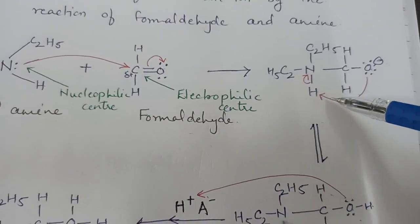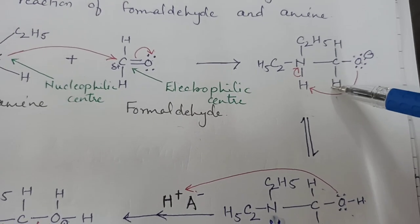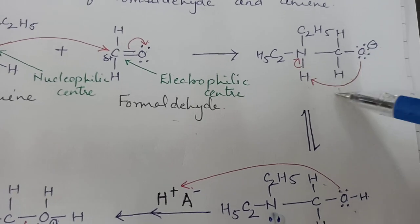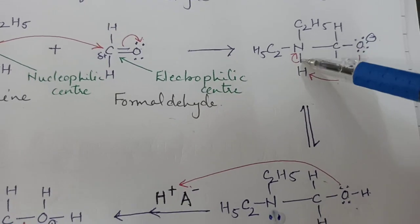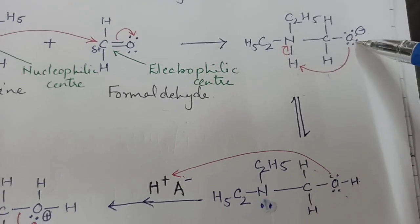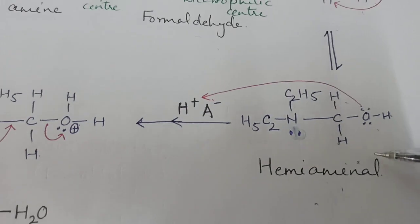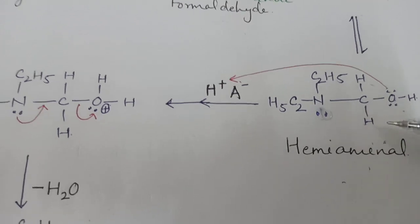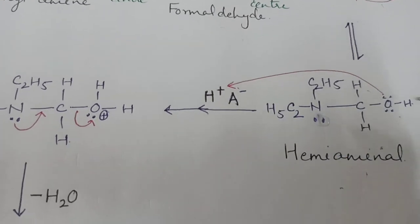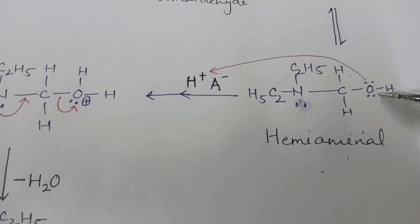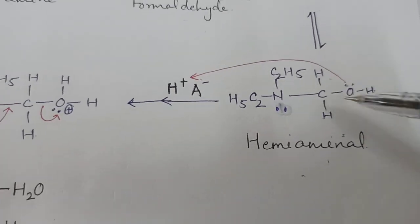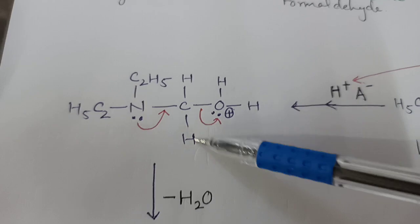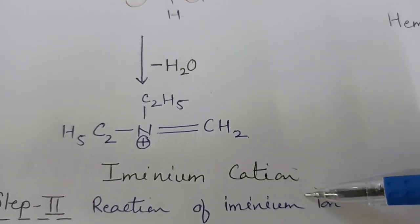This forms an addition product. As the addition product is formed, there is the migration or transfer of a proton from the nitrogen to the oxygen. This hydrogen from the nitrogen is transferred to the oxygen and it forms a hemiaminal. Since the reaction is taking place in acidic medium, this hemiaminal accepts a proton — the proton forms a bond with the hydroxyl oxygen — and as it accepts the proton, it immediately loses a water molecule and is converted into the iminium cation.